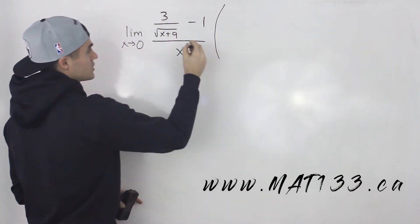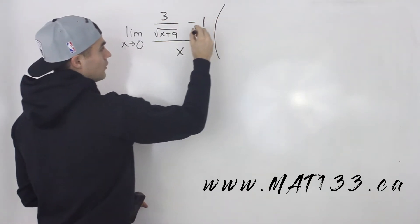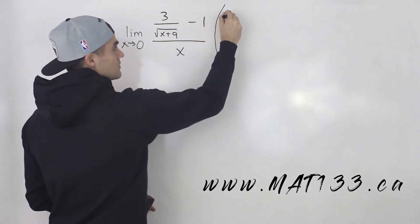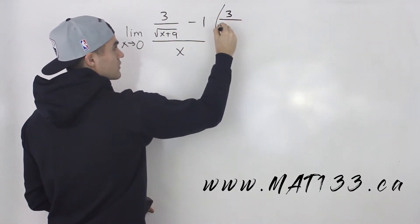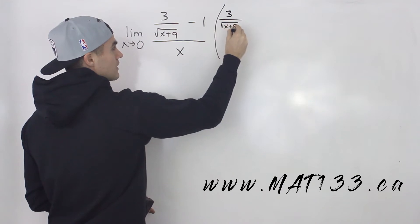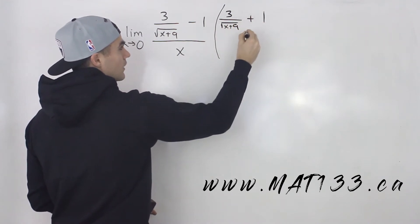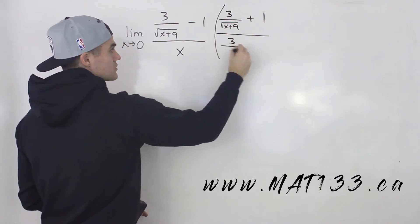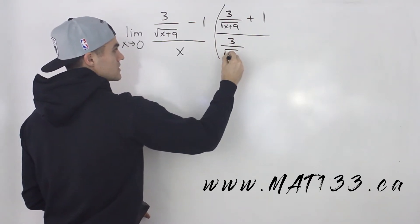And the way we're going to rationalize it is we would multiply it by the conjugate of the numerator. So it's going to be the 3 over the square root of x plus 9. And then we're going to be adding 1. And then what we do to the numerator, we also got to do to the denominator.